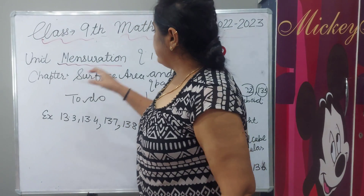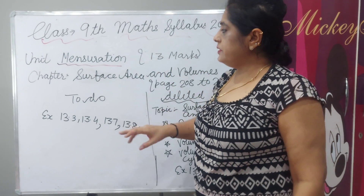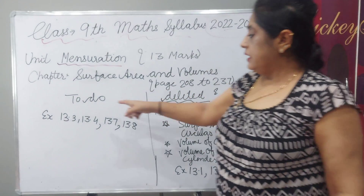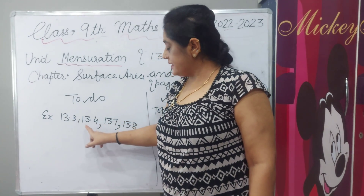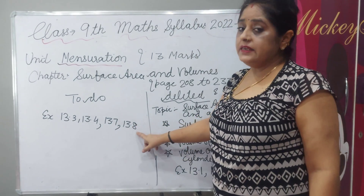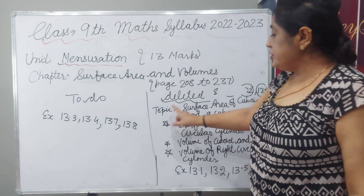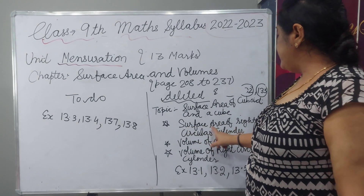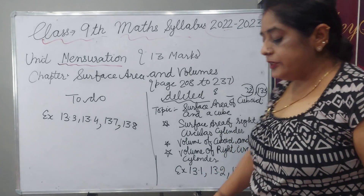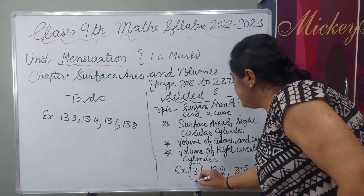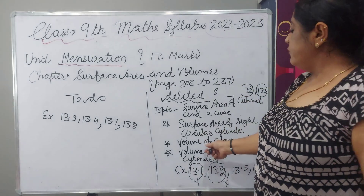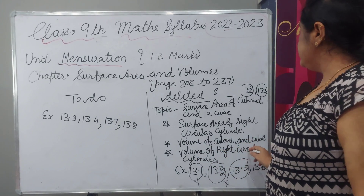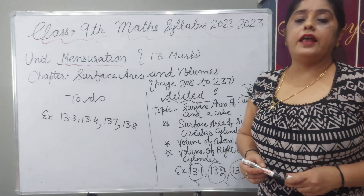Next unit is mensuration, and total 13 marks paper will come. The chapter is surface area and volume, NCERT page number 208 to 237. You have to do exercises 13.3, 13.4, 13.7, and 13.8. Deleted topics: surface area of cuboid and cube means exercise 13.1, surface area of a right circular cylinder exercise 13.2, volume of cuboid and cube exercise 13.5, and volume of right circular cylinder exercise 13.6 — all deleted.